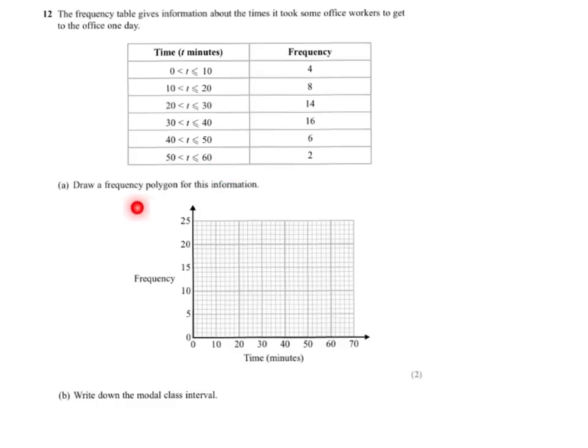We're asked to draw a frequency polygon for this information. What we need to know when we draw a frequency polygon is that our x-coordinate will be related to the time, and the y-coordinate will be related to the frequency. You can see that the frequency is on the y-axis and the time is on the x. Now obviously you can't plot an interval, so what you do for the frequency polygon is to plot against the midpoint. So we need to put in the midpoints before we do the plotting.